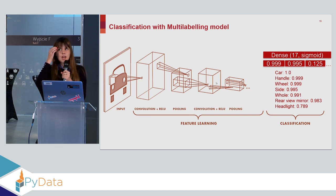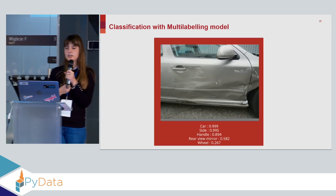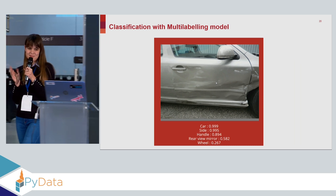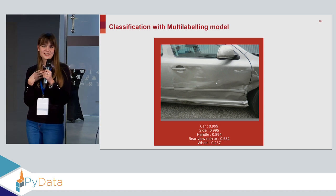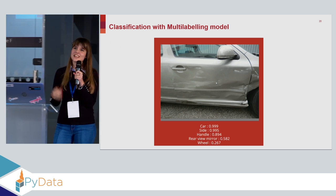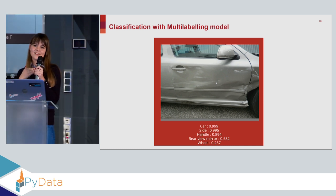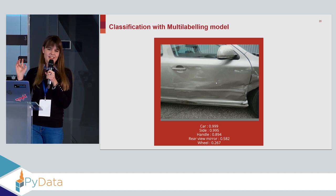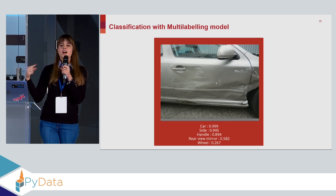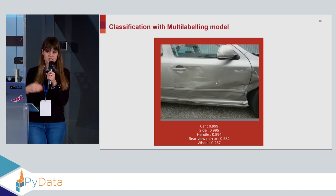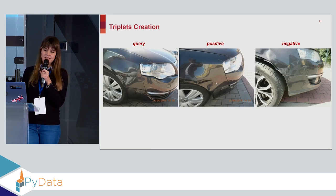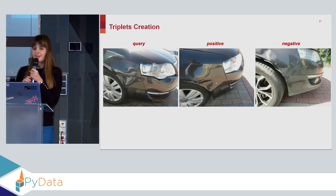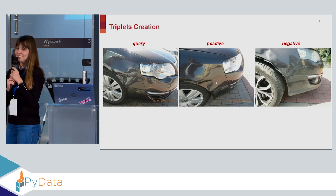We extracted features using Xception and added a few more layers in order to classify into 17 categories. We noticed that people in business like to see visual examples. So we managed to create an app where you can input a picture live and it will show you what parts of the car are in the picture. For example, here it's 99% sure it's a car, 99% sure it's the side, 89% sure it's a handle, 58% it's the rear view mirror, and 26% sure it's a wheel. So now Katerina will talk more about the main model and how we prepared it.